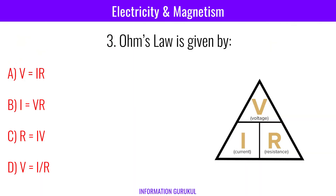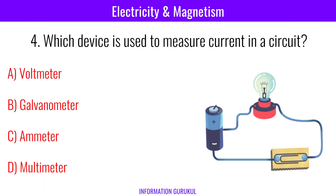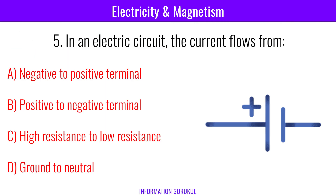Ohm's law is given by V = I × R. Which device is used to measure current in a circuit? Ammeter. In an electric circuit, the current flows from positive to negative terminal.